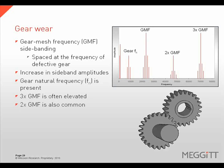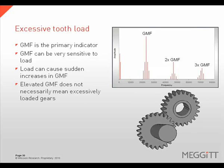Gear wear is characterized by elevated levels of gear mesh frequency and harmonics, with sidebands spaced at running speed of the defective gear. As gear wear progresses, the sideband amplitudes will increase as well as the number of sidebands. The gear natural frequency can be present, and often the 2x and 3x gear mesh frequency amplitudes are elevated. Gear mesh frequency is also the primary indicator of excessively loaded gears, and can be very sensitive to load, causing sudden increases or decreases in amplitude as load changes.